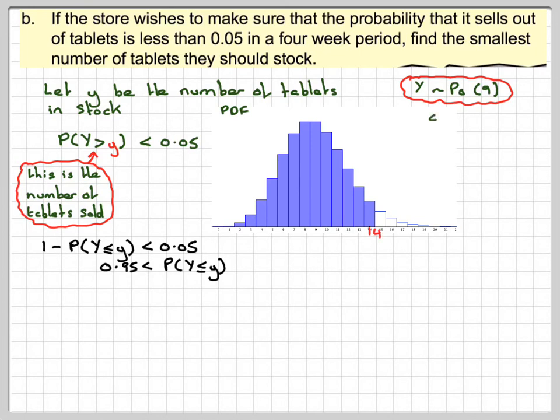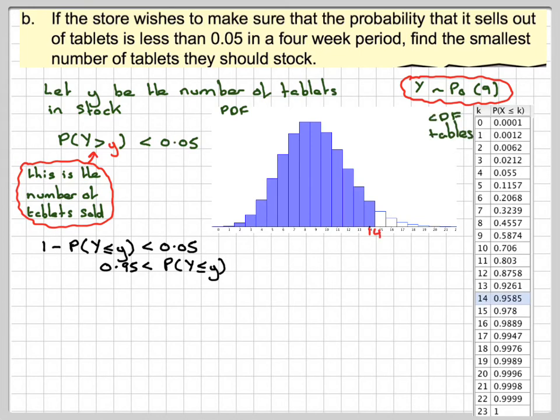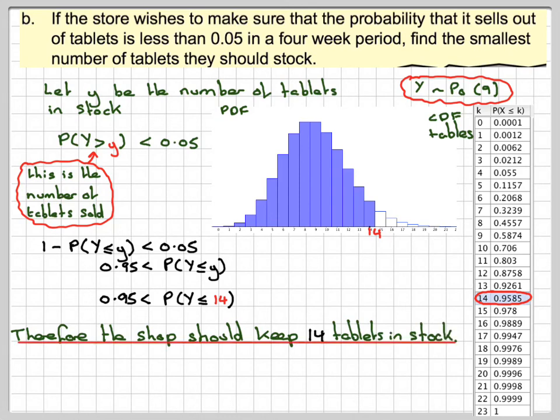So there's a copy of the PDF and the CDF table. So if we go down here, we get to 0.9585. 13 is 0.926, so we haven't gone past that. Here's where we go past it. And therefore, the probability that Y is greater than or equal to 14 is going to be greater than 0.95. And therefore, the shop should keep 14 tablets in stock.